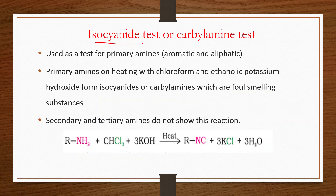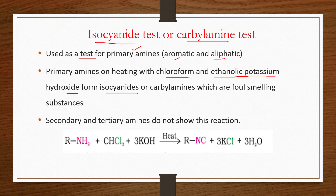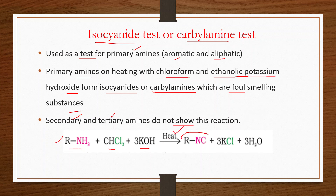Next is the isocyanide test or carbylamine test. This is used as a test for primary amines, whether aromatic or aliphatic. Primary amines on heating with chloroform and ethanolic potassium hydroxide form isocyanides (carbylamines), which are foul-smelling substances. Secondary and tertiary amines do not show this reaction. Reaction: R-NH₂ + CHCl₃ + 3KOH → R-NC (isocyanide).